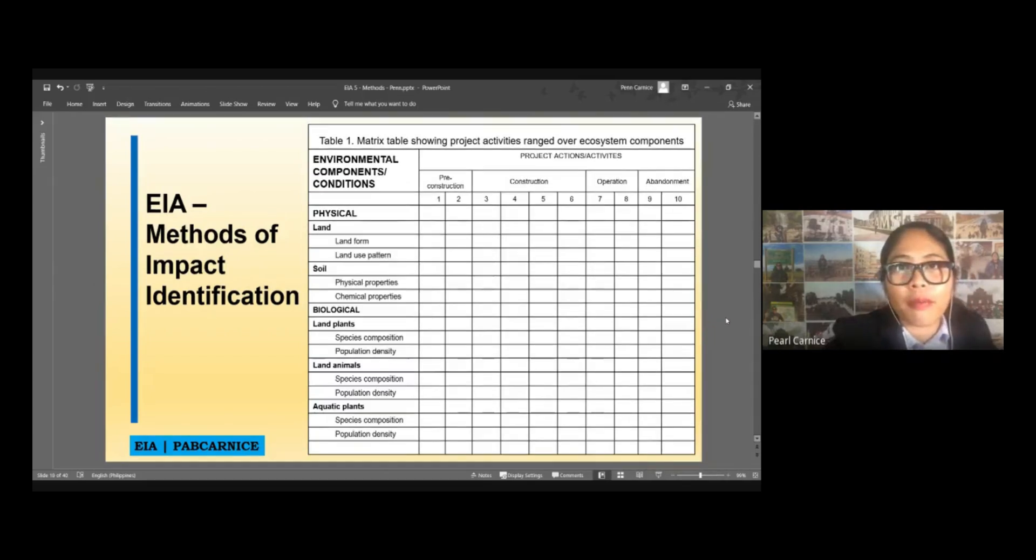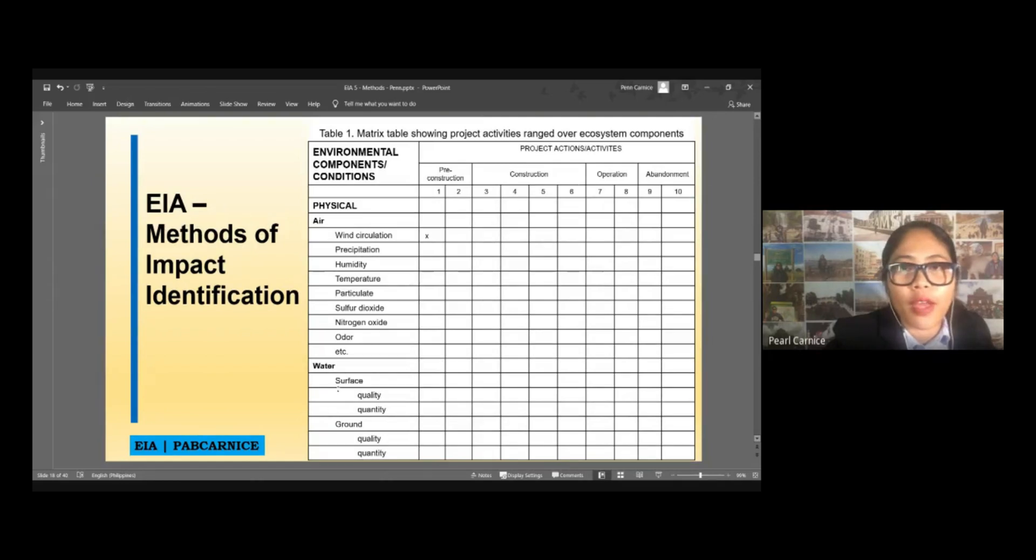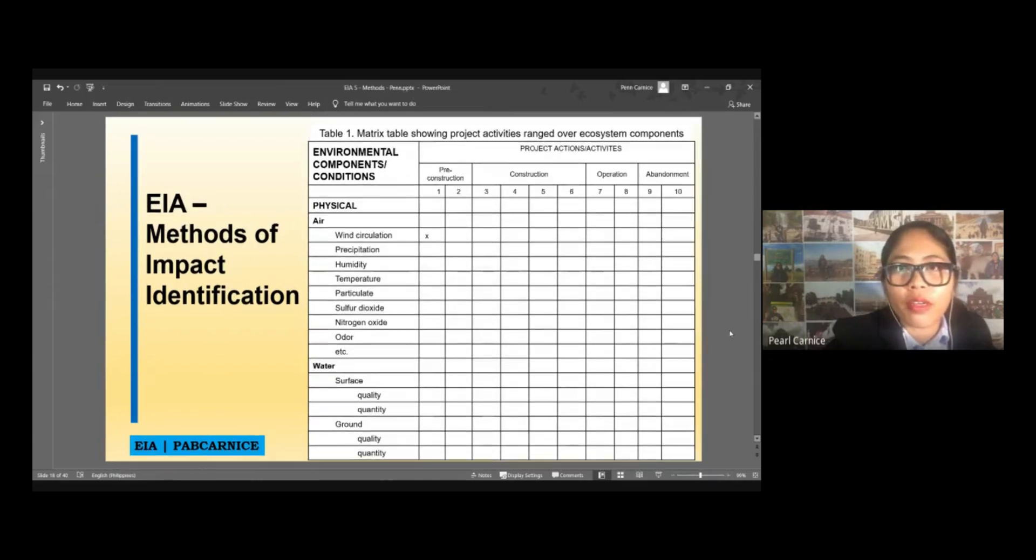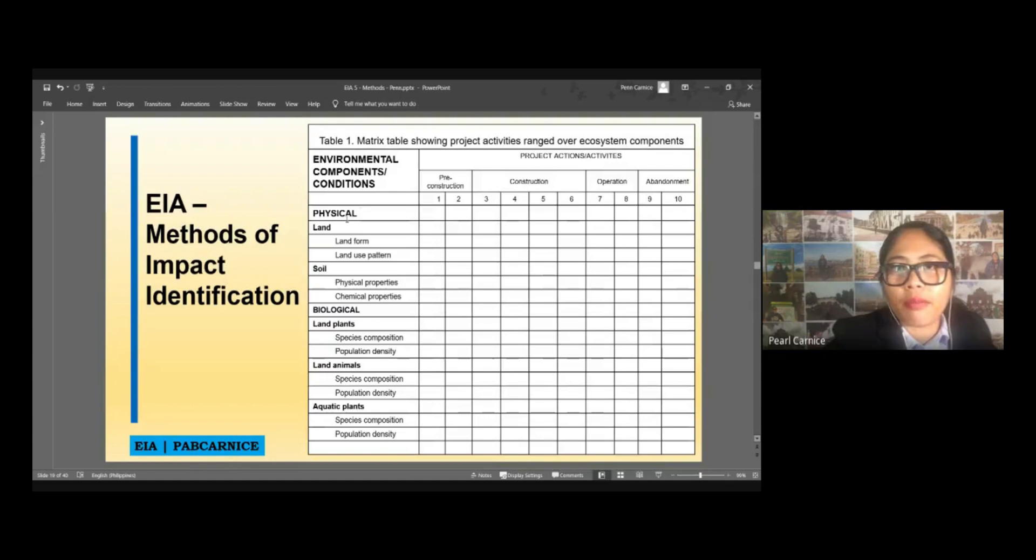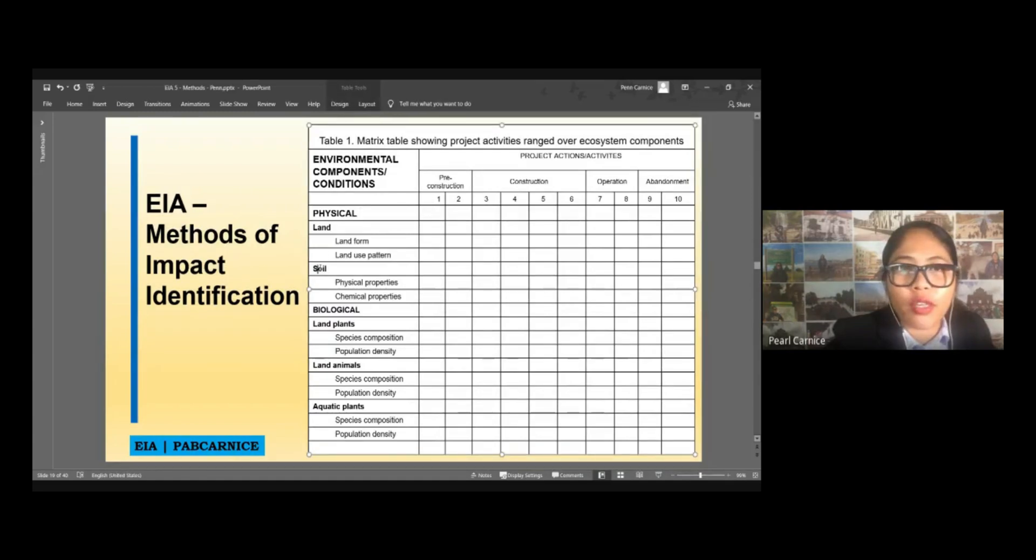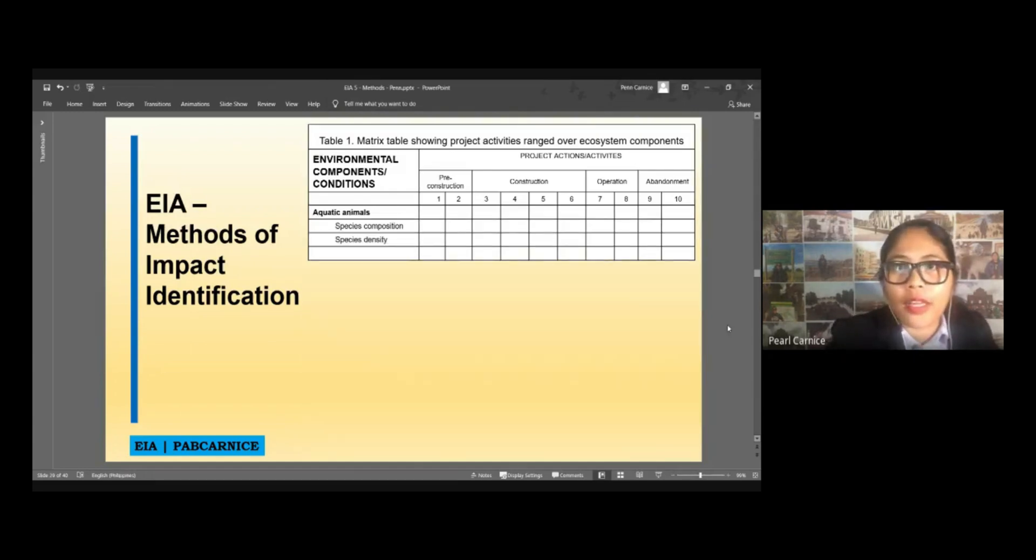So, this is an example of a matrix table with corresponding environmental components or conditions. We have physical, earlier we have air, we have water, and then we have land and soil. We also have, for example, biological. So, we have land plants, we have land animals, and we have aquatic plants. In which, basically, when you say biological, this would actually focus on species composition, population density. This is more of the diversity when it comes to biological flora and fauna.